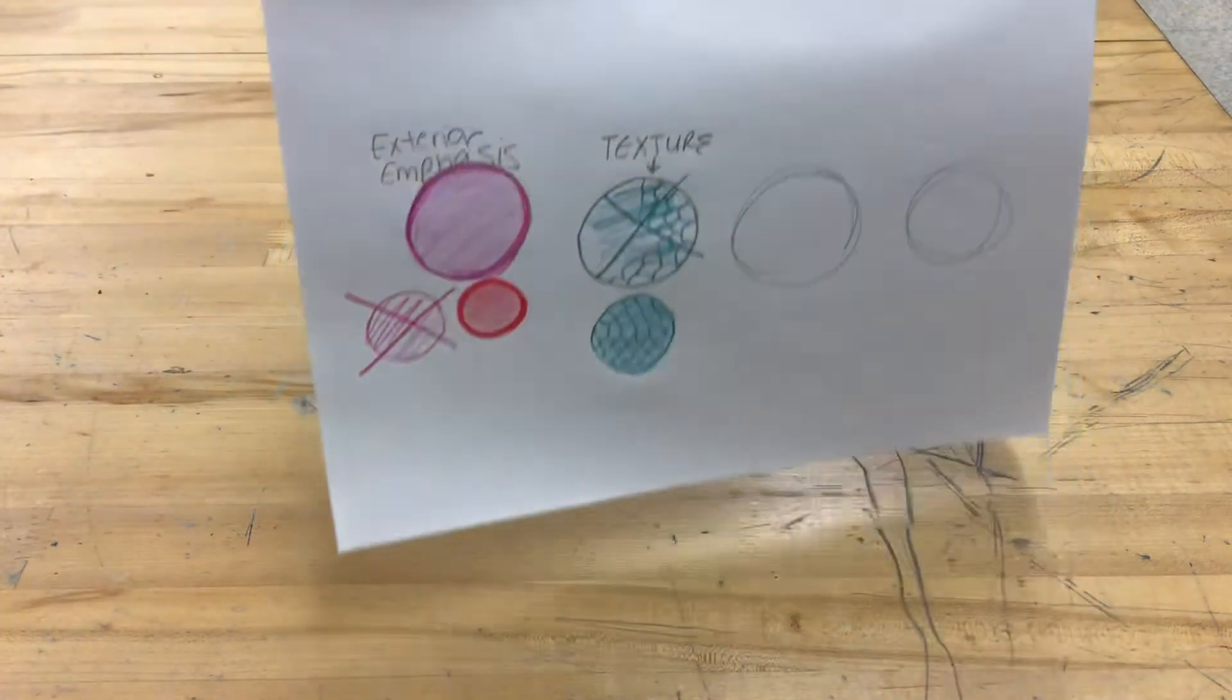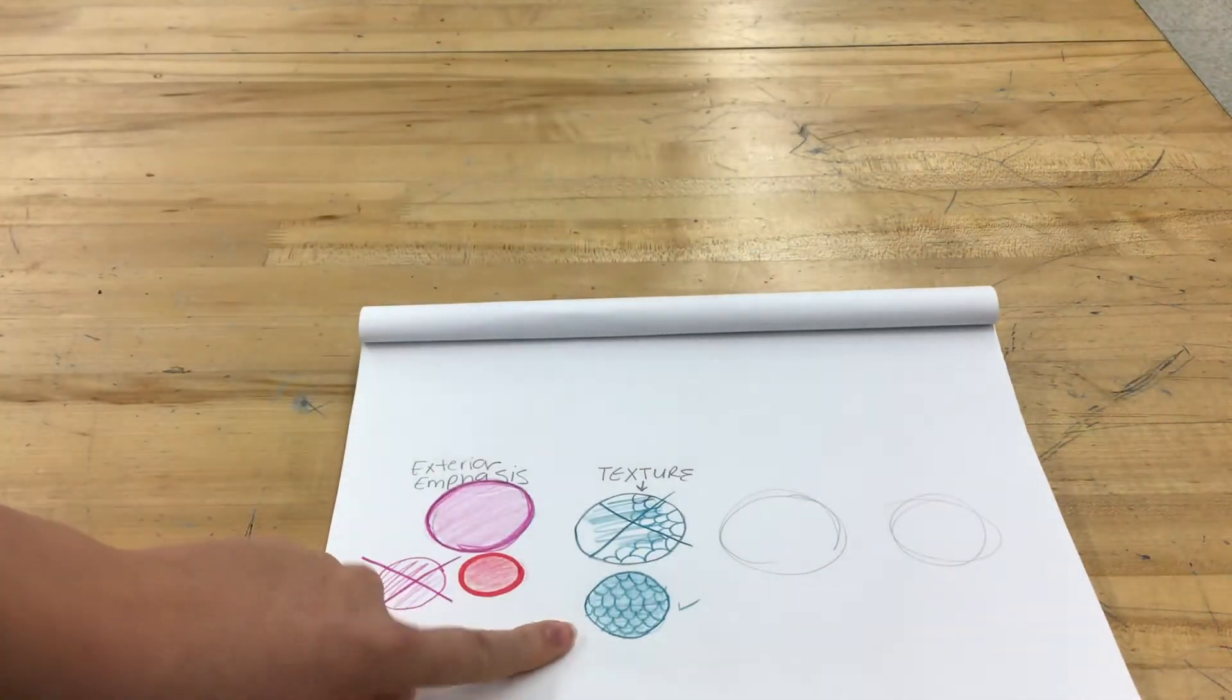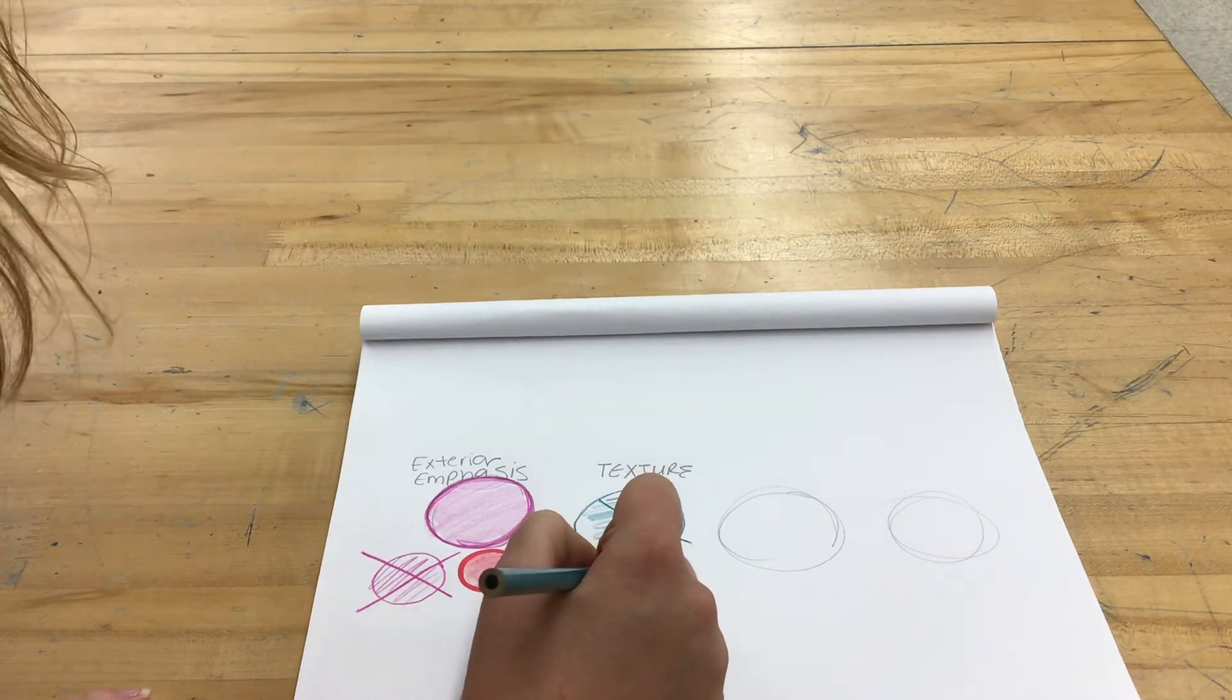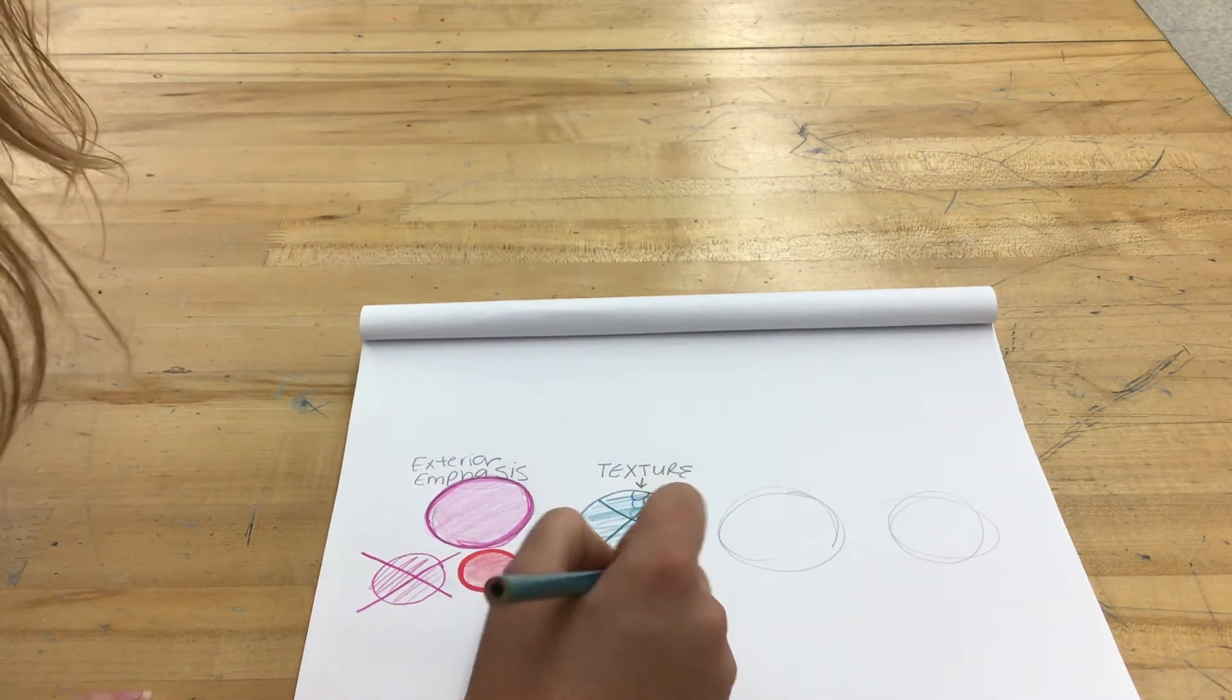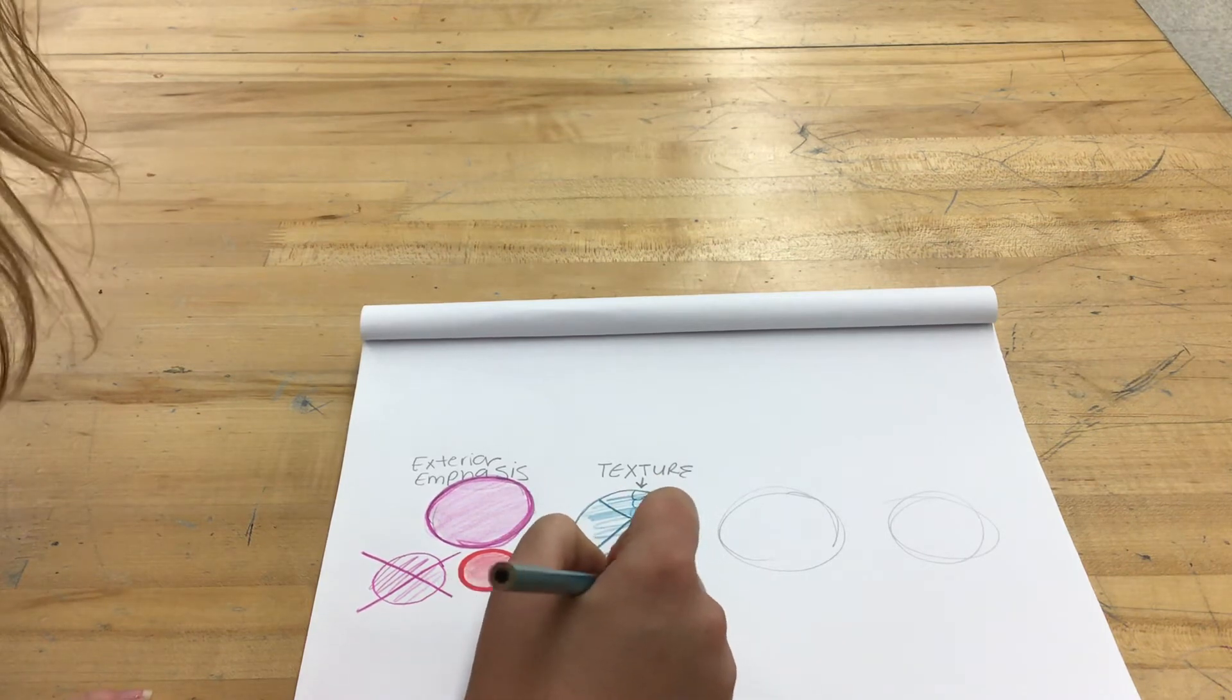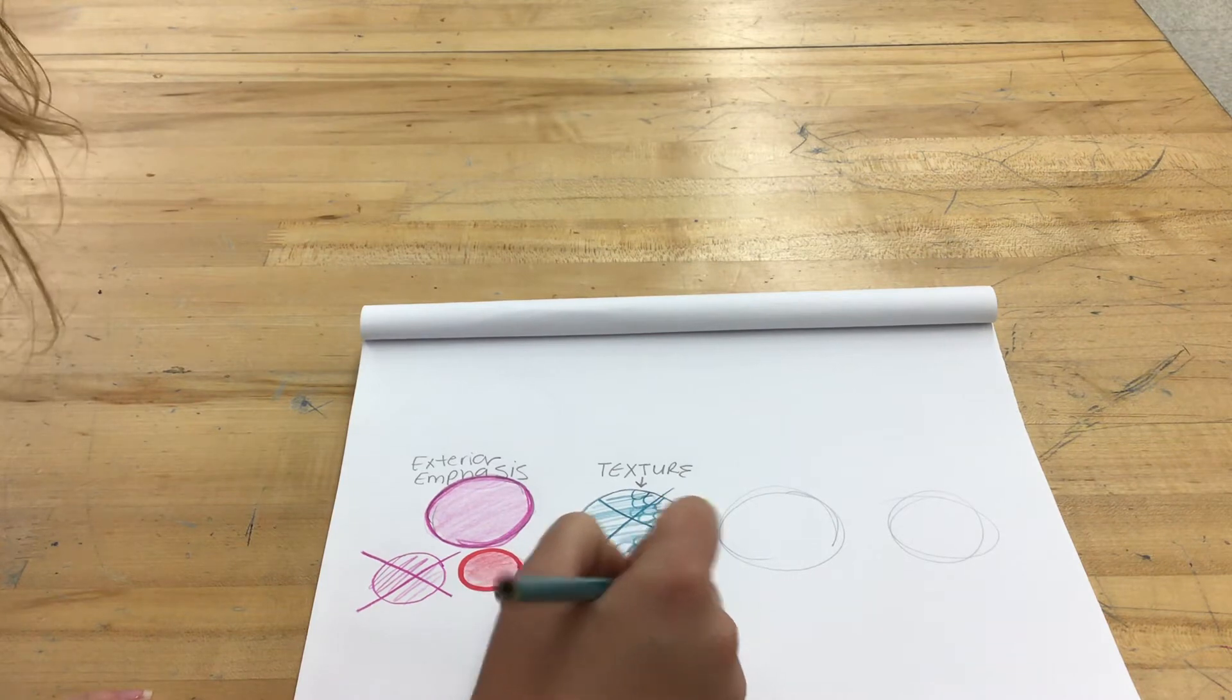No, we do not want sloppy coloring. Yes, we want it neat. If you feel the need you can go back over and go over that texture again to really make sure that it pops out. I think that would be super helpful, especially with a colored pencil.